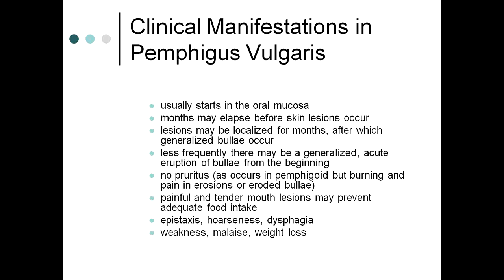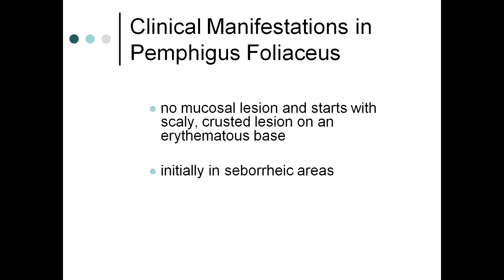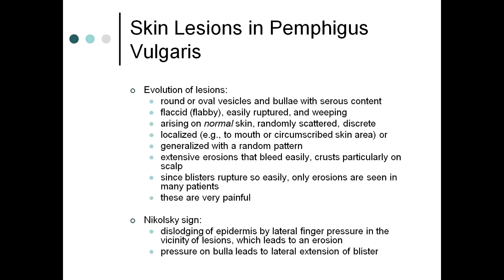In pemphigus foliaceous, there are no mucosal lesions. It starts with scaly, crusted lesions on an erythematous base, initially present in seborrheic areas but later can involve the whole body, similar to pemphigus vulgaris.